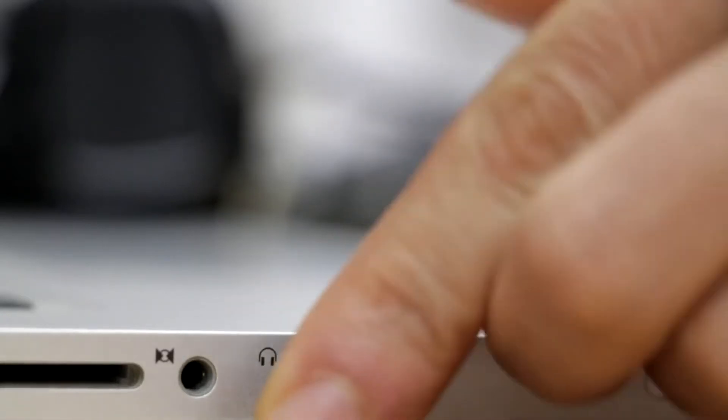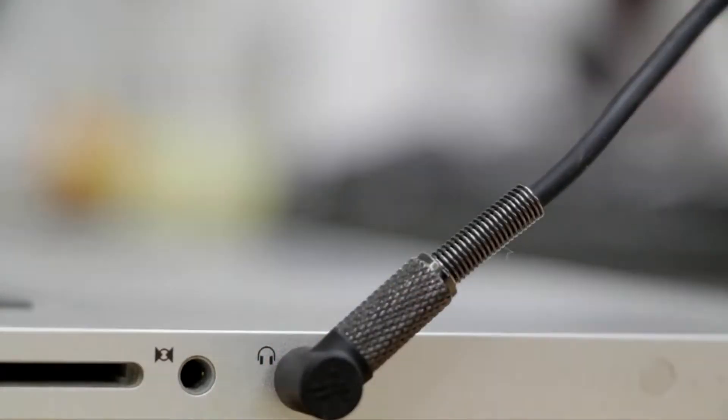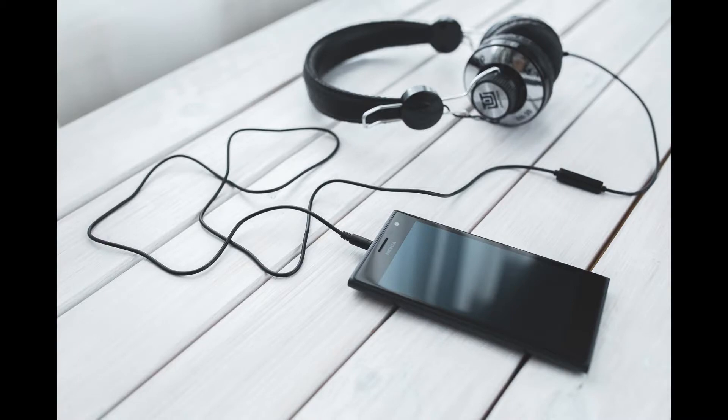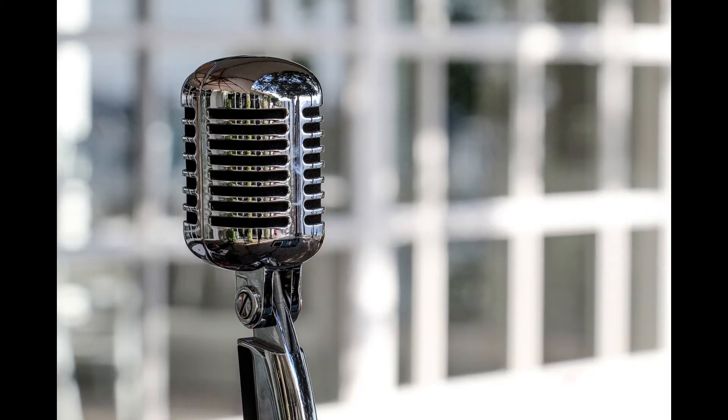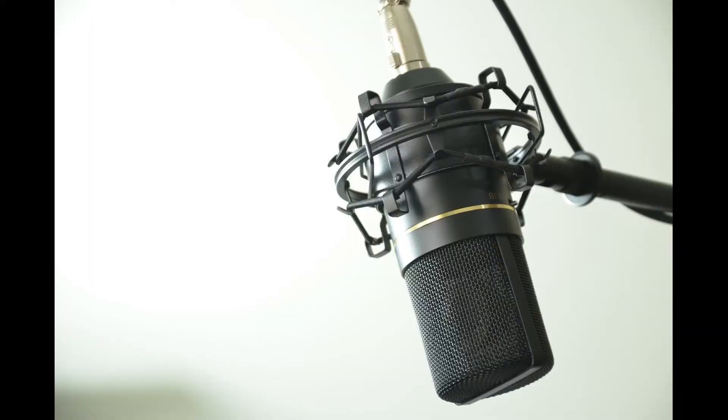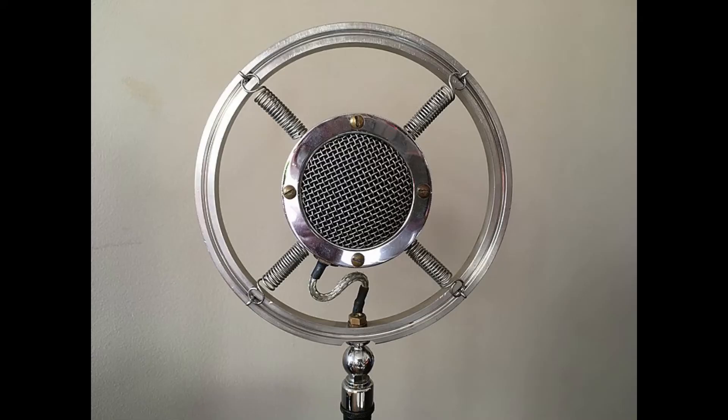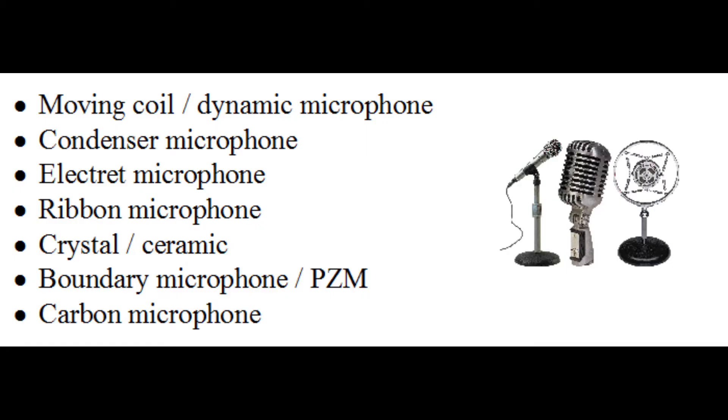We use microphones in our daily life, in our smartphones, but also if you are a singer or work at the radio station. Several types of microphones are used today which employ different methods to convert the air pressure variation of a sound wave to an electrical signal. For instance, we can find moving coil, condenser microphone, electrode microphone, ribbon microphone, and so on.